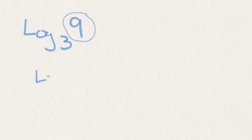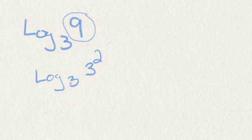Log base 3 of 9. We're going to want to rewrite the big number as a base 3 with an exponent. How do we rewrite 9 with a base of 3? Well, 9 is the same thing as 3 squared. Now we have the same bases and they cancel out, and so log base 3 of 9 is the same thing as 2.